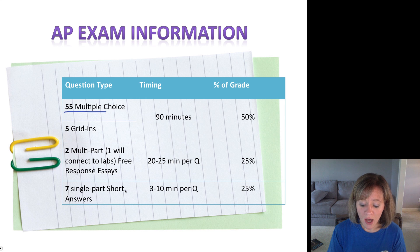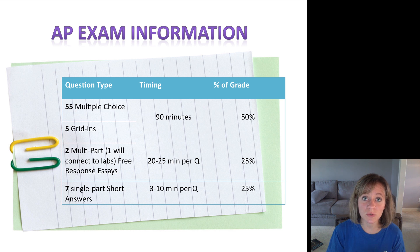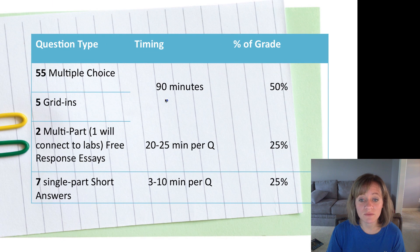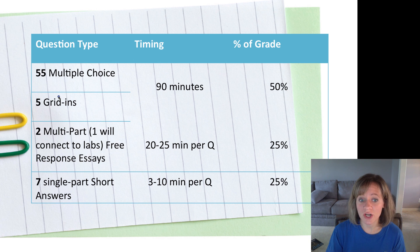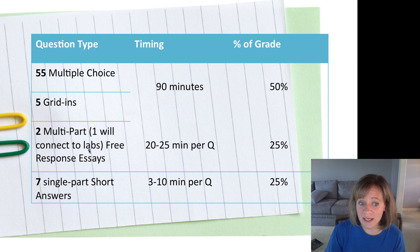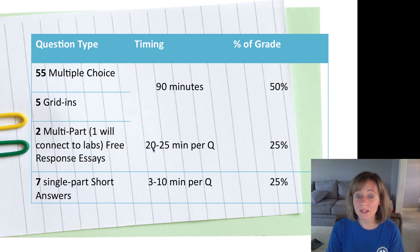Let's talk about that exam. It's going to be different than in years past, so if you do get an exam study book, please make sure it is up to date for the 2013 test. There are 55 multiple choice and five grid-ins, and you have 90 minutes for both of these. A grid-in is a math equation or problem where you fill in the number you get as your answer. That's 50% of your grade. The other 50% are your essays: two longer essays, one of which will definitely connect to the labs, expect to spend 20 to 25 minutes on that. The other seven are single short answer, only three to ten minutes on those.